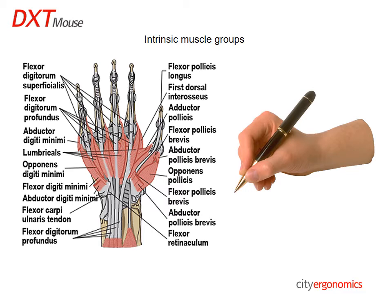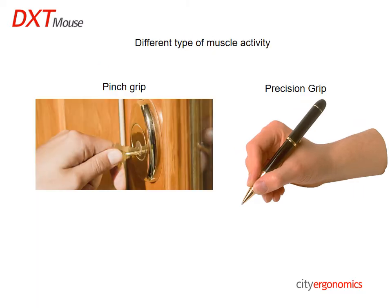But then as you engage the key into the lock and turn, you use a pinch grip which engages the extrinsic muscles with higher power. The second difference is that each grip involves a different type of muscle activity.